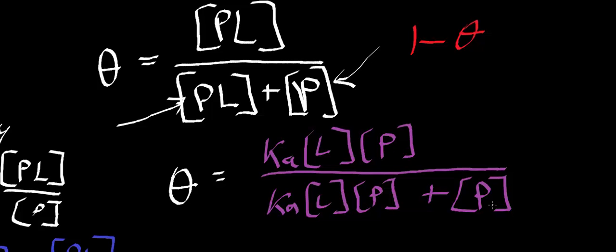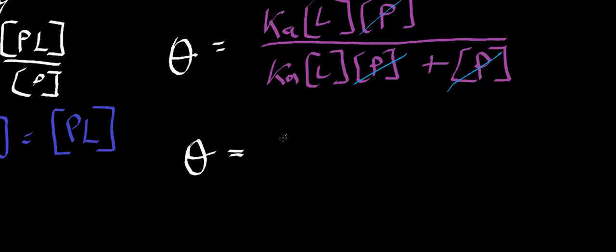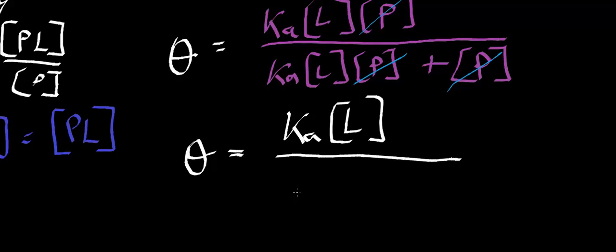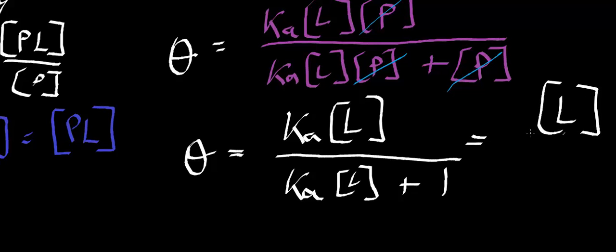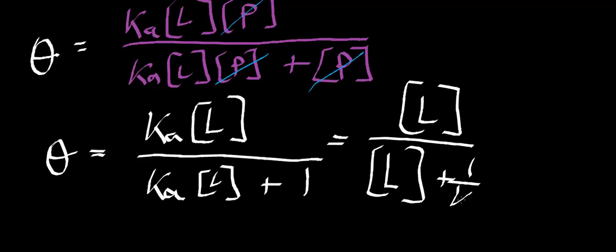Notice that you can factor out the concentration of P, so the concentration of P cancels. It turns out that theta, expressed in these variables, doesn't depend directly on the protein concentration. What it simplifies to is: theta equals Ka times the ligand concentration divided by Ka times the ligand concentration plus 1. We can also write this as the ligand concentration divided by the ligand concentration plus 1 over Ka — obtained by dividing numerator and denominator by Ka.